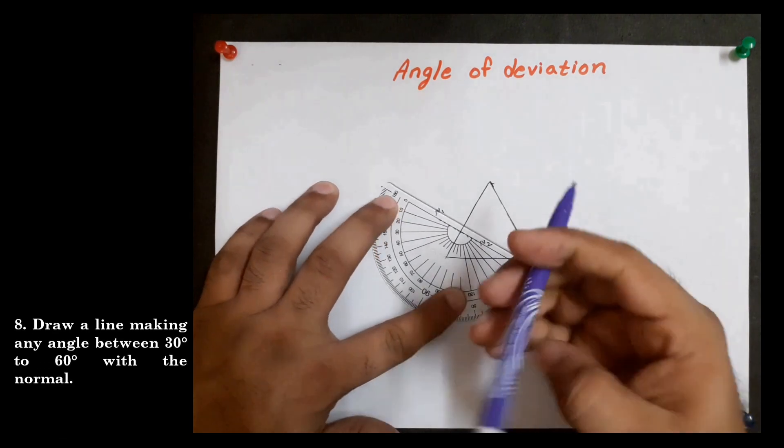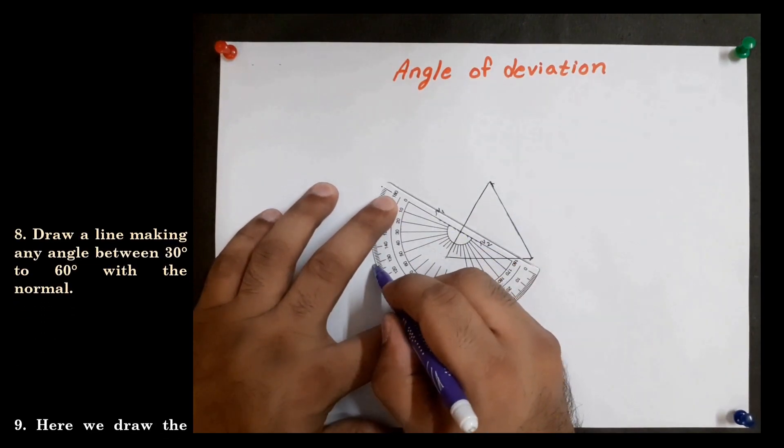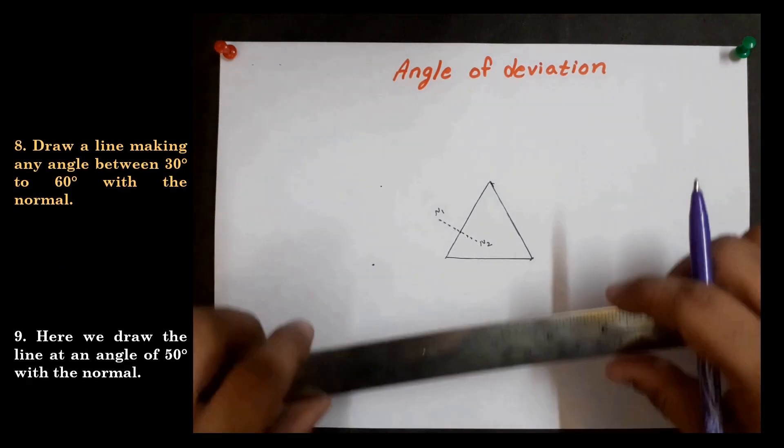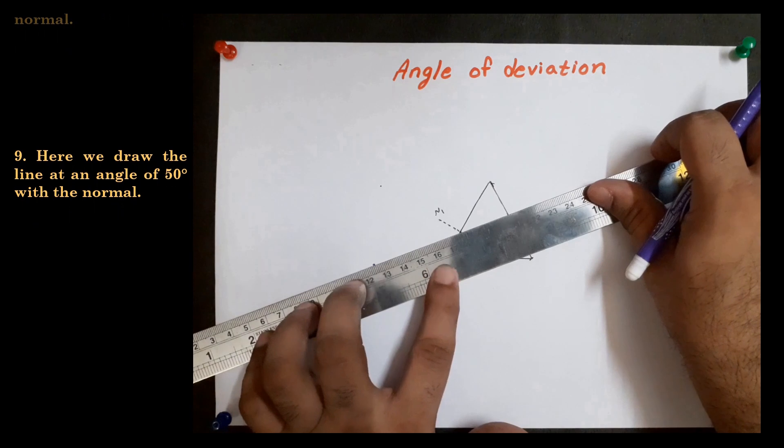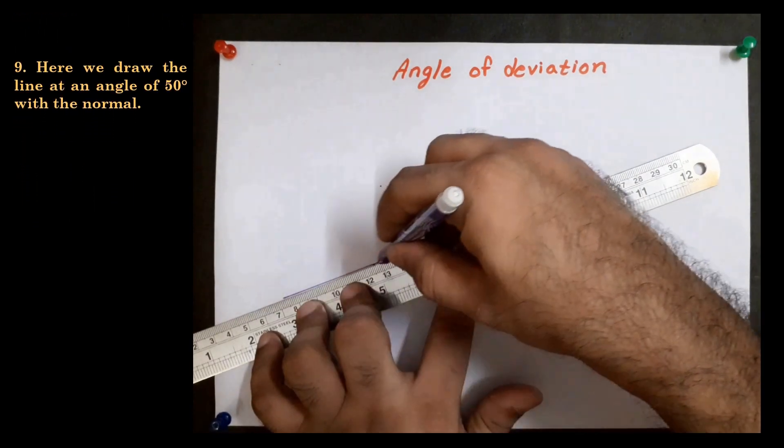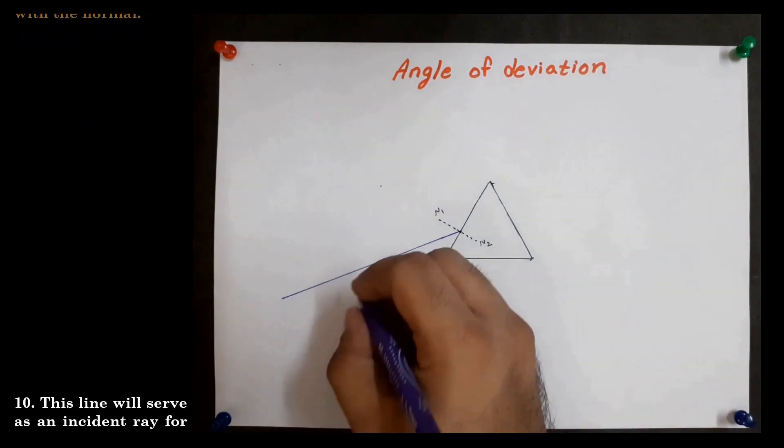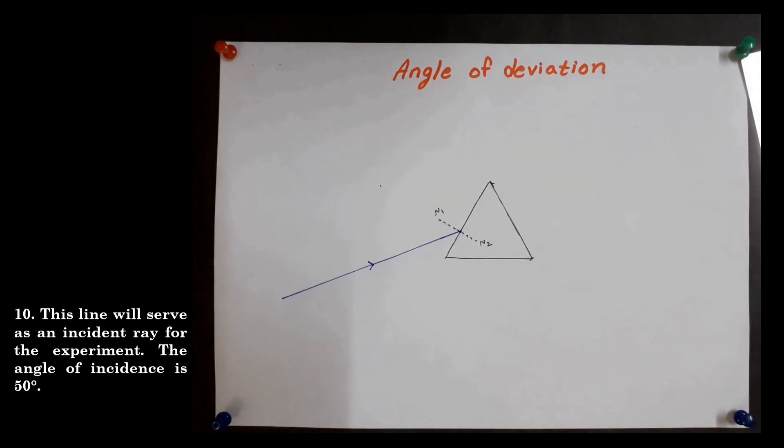Draw a line making an angle between 30 degrees to 60 degrees with the normal. Here we draw the line at an angle of 50 degrees with the normal. This line will serve as an incident ray for the experiment. The angle of incidence is 50 degrees.